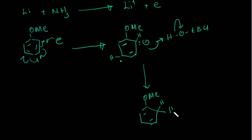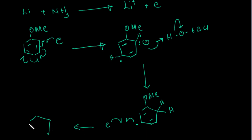This radical then reacts with another solvated electron that is already present in our system, converting the radical into an anion.